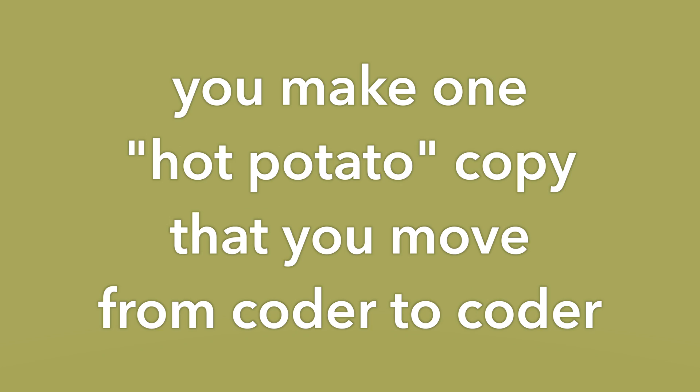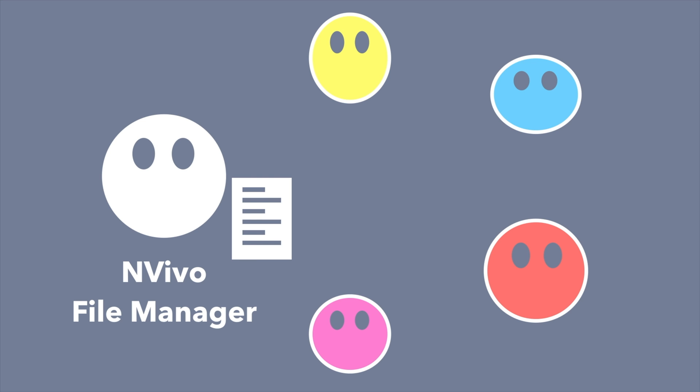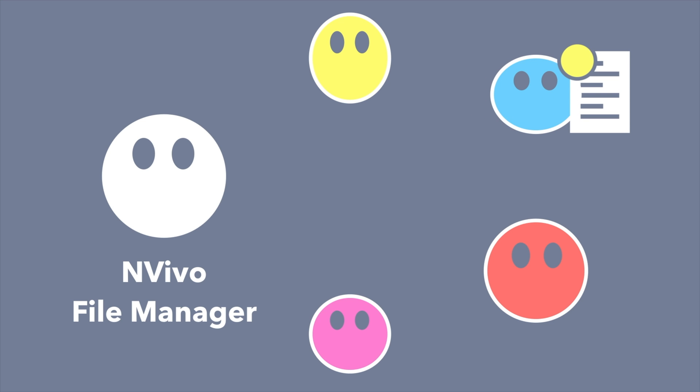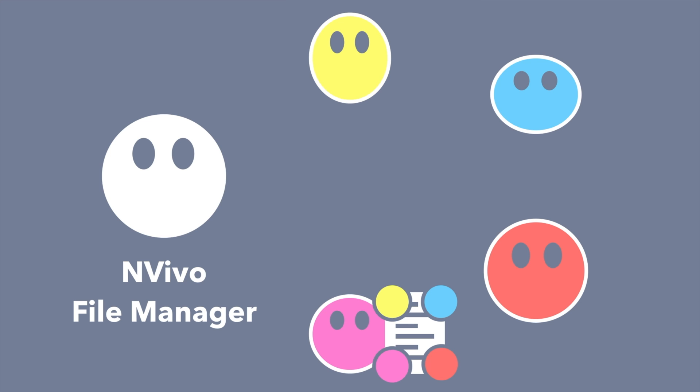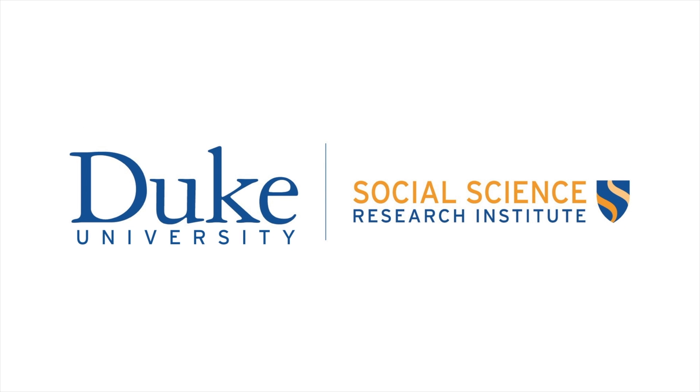The other way you can collaborate in the standalone regular version of NVivo is what I call hot potato — and it's essentially as it sounds. You still have an NVivo file manager who generates a team file with all your data, nodes, memos, and team protocol. But instead of making copies for each coder, you make one hot potato copy that moves from coder to coder. Each person codes, then creates a new copy with a new date and their initials, and sends it to the next person.